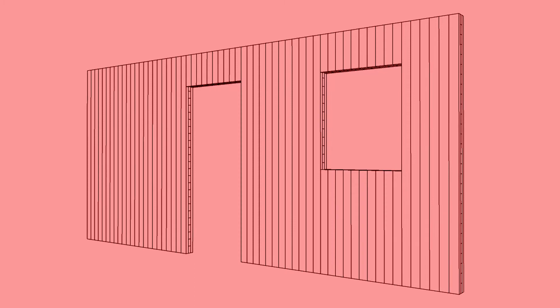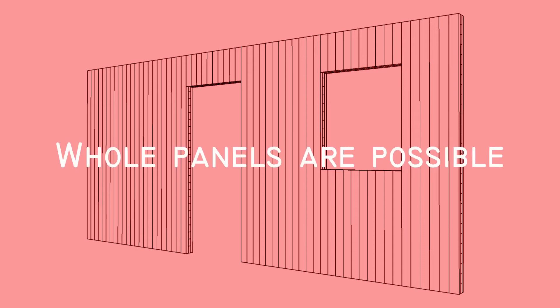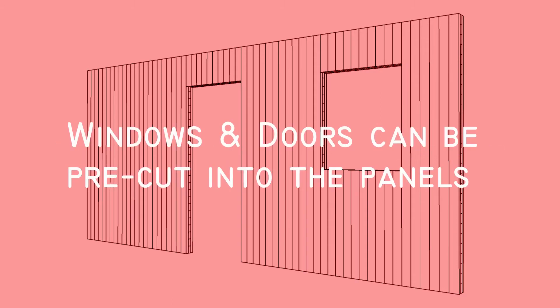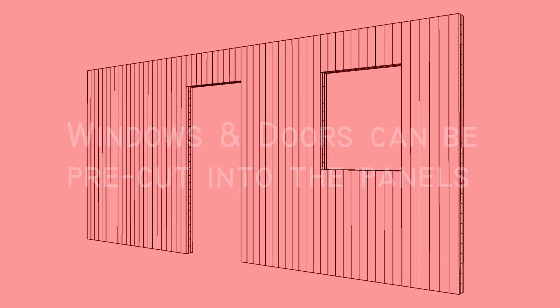So what are CLT panels? CLT is a system of manufacturing building elements from mass timber. Panels can be whole parts of a building, such as a wall, roof or floor, and they will often have window and door openings pre-cut during the manufacturing process.